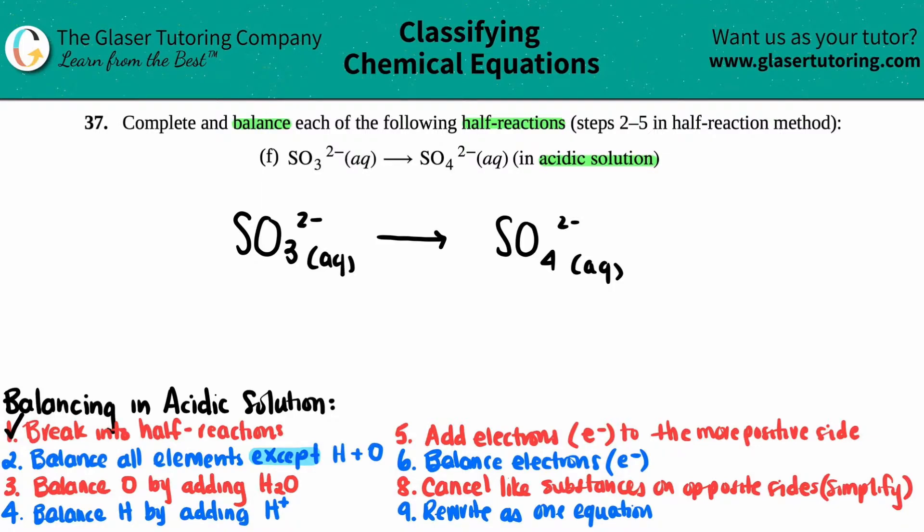Step one of balancing redox reactions is to break it into the half reaction. We already have a half reaction, so we don't have to do that. Now we just got to do steps two through five. So let's go.